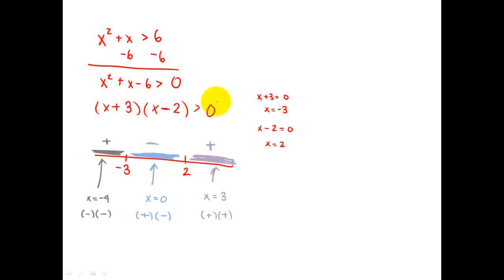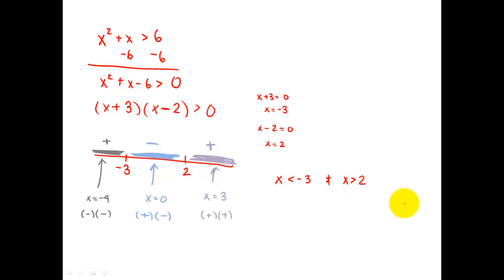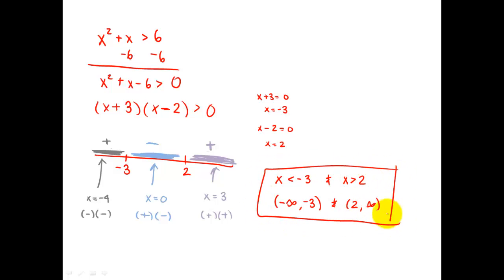In this example I'm looking for where it's greater than zero — in other words, where it's positive on the number line. That happens when x is less than negative three and when x is greater than two. Another way to write this is from negative infinity to negative three, and from two to infinity. Both ways mean the same thing. And that's a little introduction to polynomial inequalities — I hope it helped.